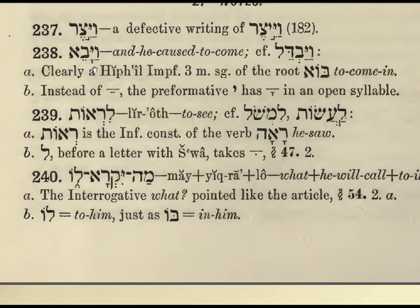By Yahweh. Compare 'Lirot' — the infinitive construct of the verb Ra'ah. So Ra'ot is the infinitive construct of Ra'ah. The preposition Lamed before a letter with Shwa takes the Chirik.